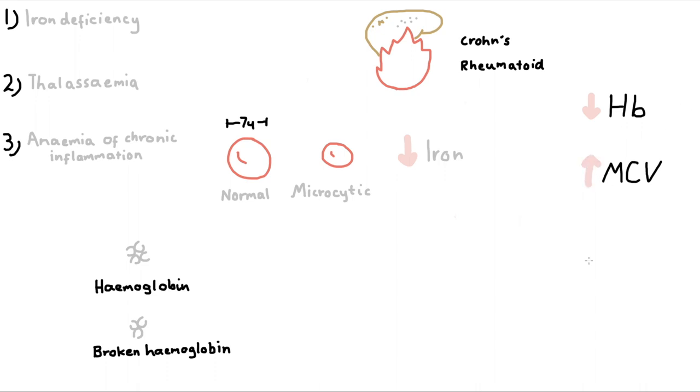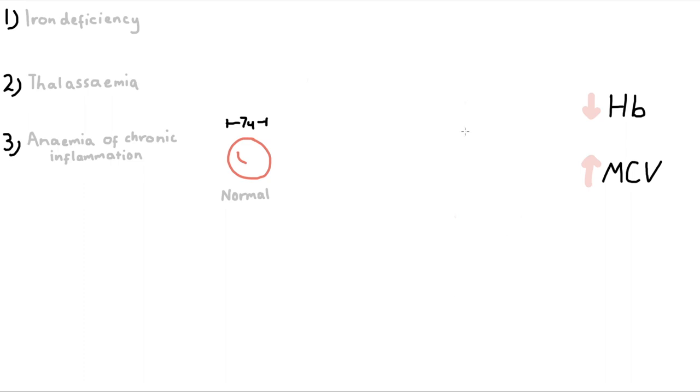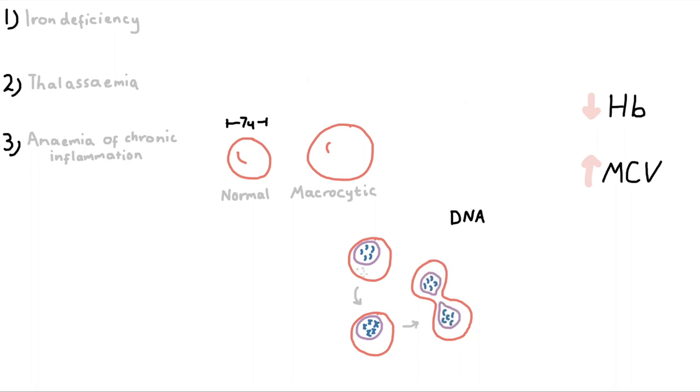If the MCV is high, the RBCs are called macrocytic. Macrocytic RBCs have had some fundamental problem with their synthesis of DNA. In a normal red blood cell precursor, DNA is replicated so that the cell can eventually split like this. But at the same time, hemoglobin is constantly being produced, which is then shared between the two divided cells. But if the DNA synthesis process is interrupted in some way, the replication is slower, but the production of hemoglobin continues at the same rate. There's so much hemoglobin being produced, this cell gets swollen and packed out.